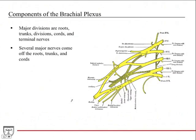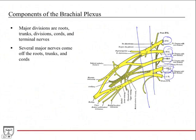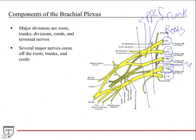The brachial plexus is broken down into specific components. Starting with the roots, labeled here with Roman numerals: C5 and C6 form the upper trunk, the C7 root forms the middle trunk, and C8 and T1 form the lower trunk. So you have the roots forming the trunks: upper trunk from C5 and C6, middle trunk from C7, and lower trunk from C8 and T1.